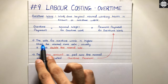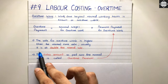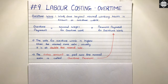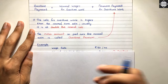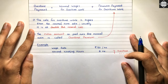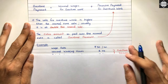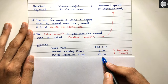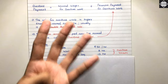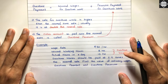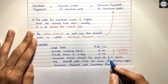The rate for overtime work is higher than the normal time rate — usually at double the normal rate. The extra amount paid over the normal rate is called overtime premium. Now let's take an example. A worker's wage rate is 50 rupees per hour. Normal working hours in a day are 8 hours, but actual hours worked on a given day were 12 hours. So four hours of extra work happened — those four hours are the overtime.